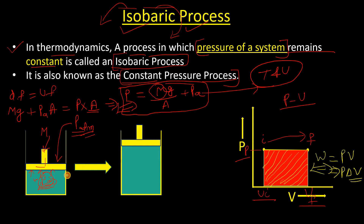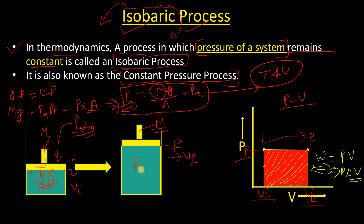Looking at the system: in the initial condition my volume is Vi, and in the final condition my volume is Vf. The mass is the same, so the pressure will be the same. When I supply heat, the kinetic energy increases, so my temperature and volume will increase — but my pressure is not going to change.